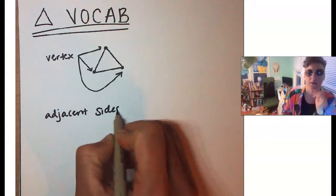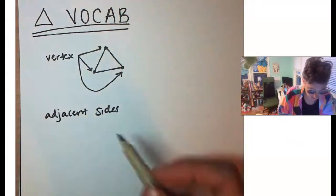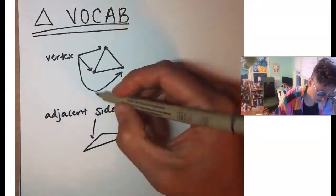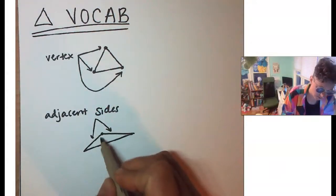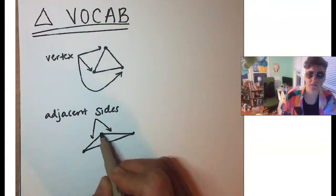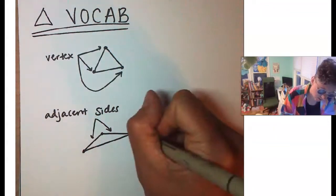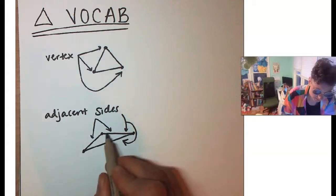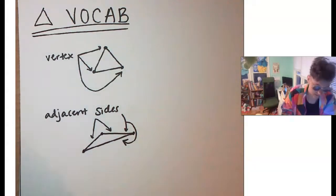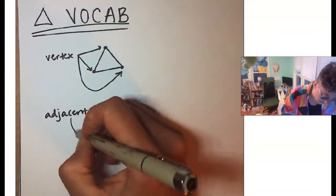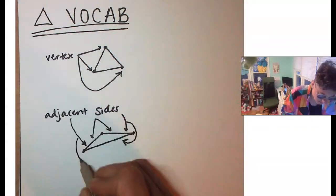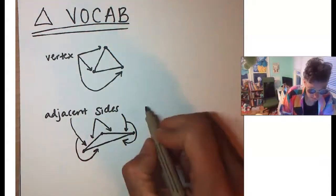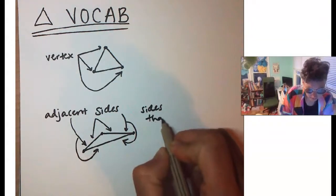We've got adjacent sides, which are sides that are next to each other. So in this triangle, these would be adjacent sides — they share a vertex. These two sides are adjacent, and this side and that side are adjacent. Adjacent sides are simply sides that are next to each other and share a vertex.